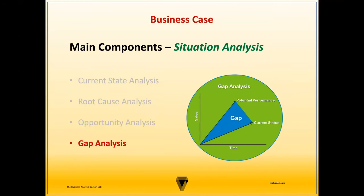For the gap analysis, we're conveying the results through a table. Some of the features we're looking at is tracking the application status — this is something that is available in the current state. But the gap identified is that the system integration only updates nightly, so the corrective action is to implement real-time system integration updates. Another example is the ability to submit online admissions applications. This is not available in the current state, and we do want it in the target state, so the corrective action would be to implement online application submissions.